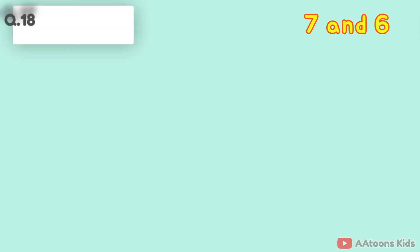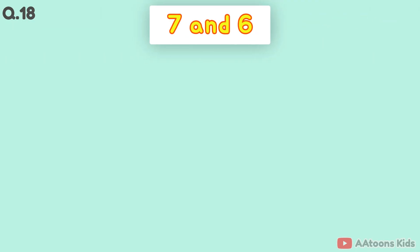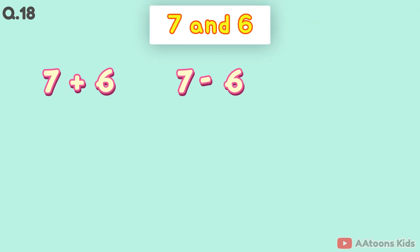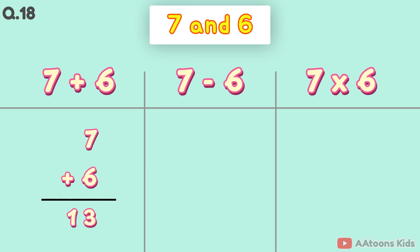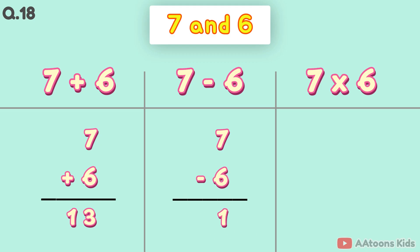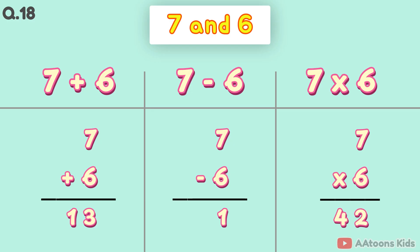The two numbers are 7 and 6. 7 plus 6 is 13. 7 minus 6 is 1. 7 times 6 is 42.